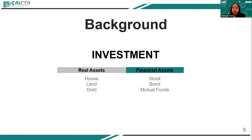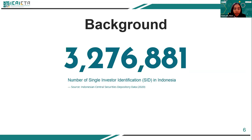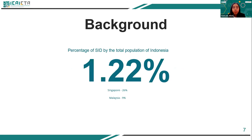Investment in financial assets is identical to the potential for large profits, unless with great risk, but has an easier disbursement mechanism compared to investing in real assets. Because of the convenience of investment in financial assets, its development in Indonesia is growing rapidly. As of 2020, there are 3.2 million people in Indonesia identified with a single investor identification, but that is only 1.22% of the total population — significantly low compared to other Southeast Asian countries. Singapore has 26% and Malaysia has 9%.